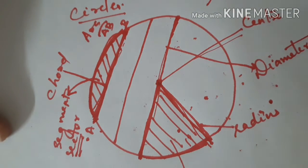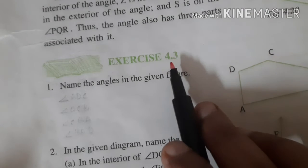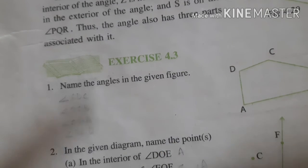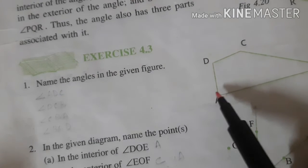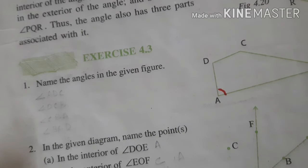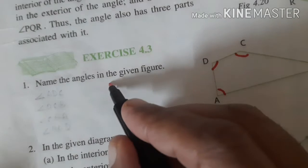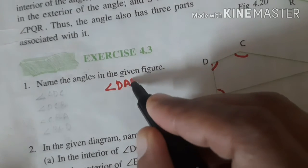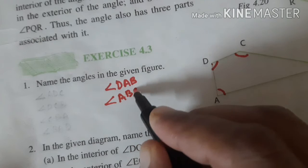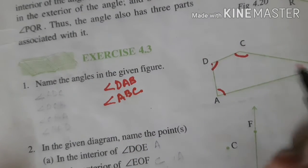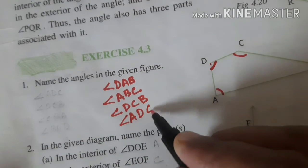These are the parts of the circle: center, radius, diameter, arc, chord, segment, sector. This is important for exams, so draw and study the figures. Now do exercise 4.3, page 80. The first question: name the angles in the given figure ABCD. There are four angles. Angle A can be written as angle DAB or angle BAD; angle B as angle ABC; angle C as angle DCB or angle BCD; angle D as angle ADC.